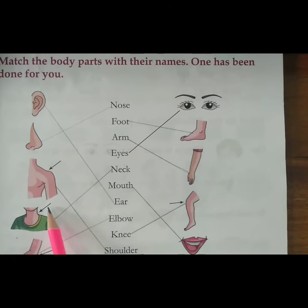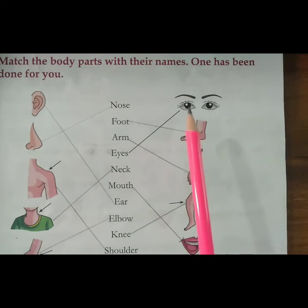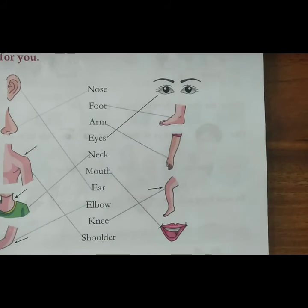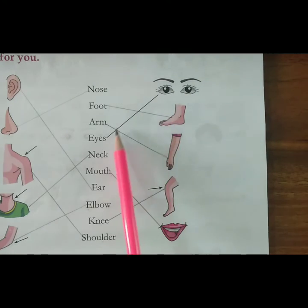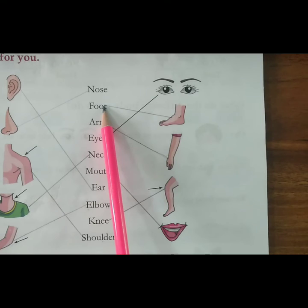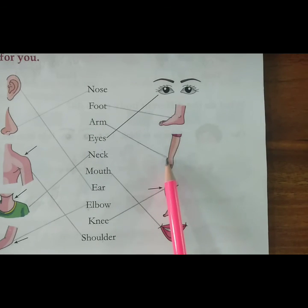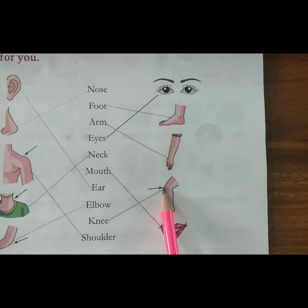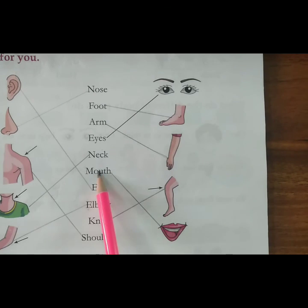Now the next picture — the arrow is showing the picture of neck, so you can match it with neck. Next picture is the picture of elbow — arrow is showing the elbow, so you have to match it with elbow. Eyes are already matched. Next is the picture of foot — match it with foot. Next picture is the picture of arm — match it with arm. Next picture, the arrow is showing the knee — match it with knee. And the last one is the picture of mouth — so you have to match it with mouth.